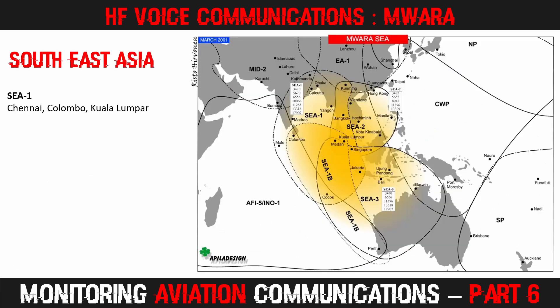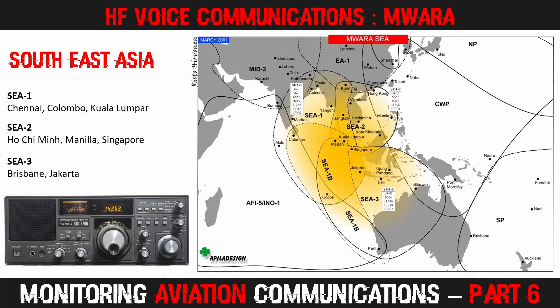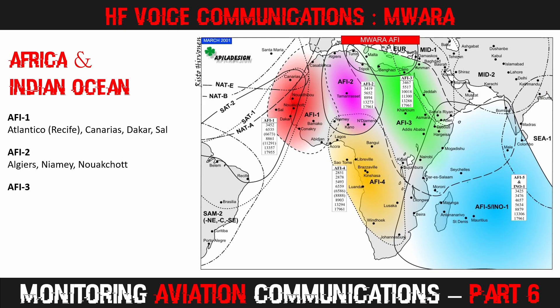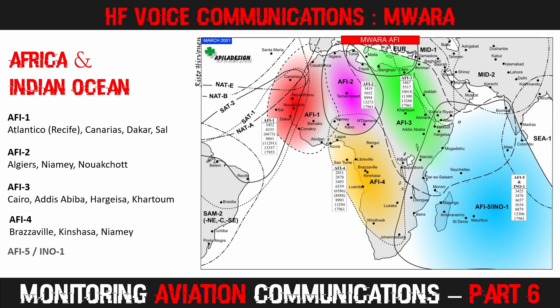When I first started monitoring HF Aviation Communications in the 1990s, I would always try to receive the Southeast Asia frequencies. It brought much joy to me when I received signals from India and Indonesia with an old Yaesu FRG-7700 and 20-metre dipole set up in my mum's backyard in Ireland. From that location I could also receive the African stations daily. The 11300 kHz frequency for AFI-3 used to be particularly busy — I would monitor aircraft bartering for flight levels from Cairo, Khartoum, and Nairobi. A lot of traffic has since moved to satellite, but I'm sure HF check-ins are still taking place.